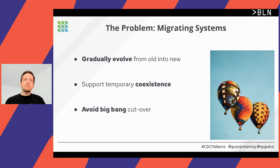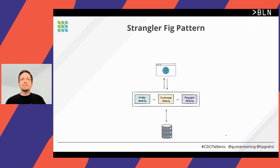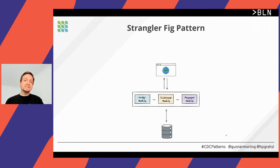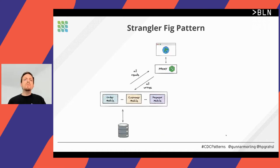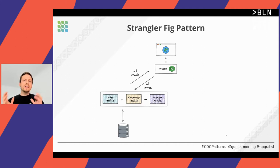Let's discuss a concrete example. We have a fictional monolithic e-commerce application with a few modules — let's say three — and we want to migrate this monolith into microservices, starting with the customer module in the middle. In the first step, we introduce a proxy mechanism — could be nginx or anything else — and at this point the proxy just passes through all read and write requests to the monolith as if nothing has changed yet.